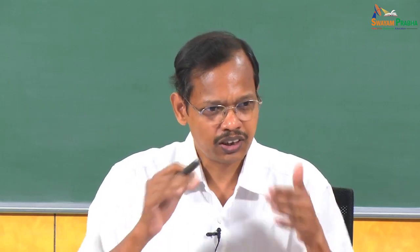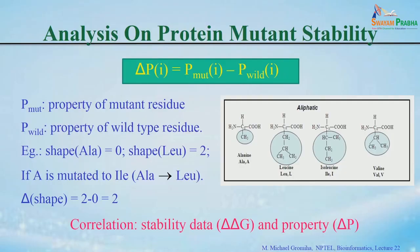For each property, you have 20 values for the 20 amino acid residues. On the other side you have the experimental data. To relate them, for any property p, you calculate the difference in property: delta p of i equals p_mutant(i) minus p_wild(i) — i.e., the property of the mutant residue minus the property of the wild-type residue.